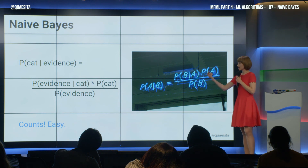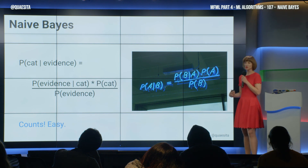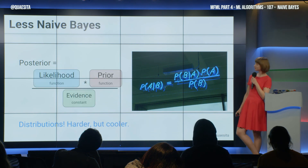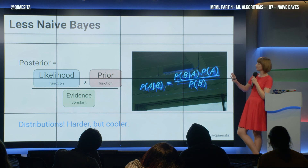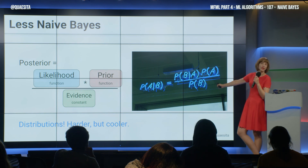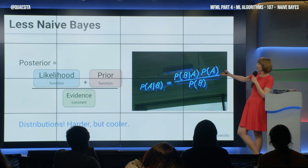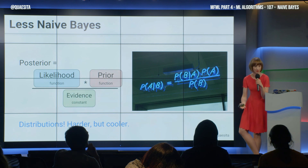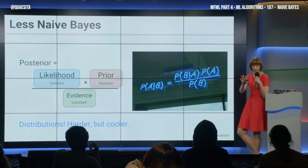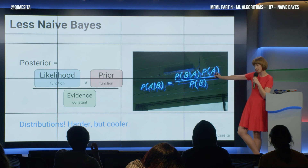Now there's a naive version — this counts thing — but there's also a less-naive Bayes. That one involves things like likelihood functions and priors. Warning: this is harder, but it is so cool. And if you're not careful, you will really fall in love with it. Like me, you might sink several years of your life into this. So watch out — maybe don't flirt with it too much if you don't want to fall for it.